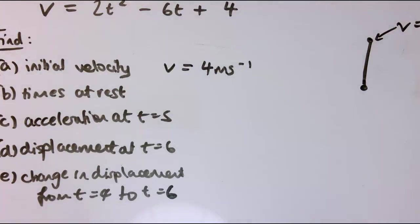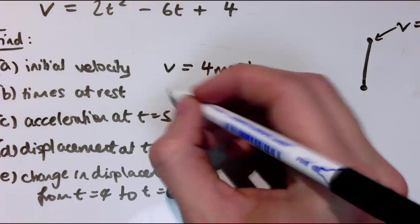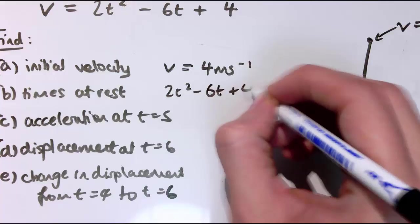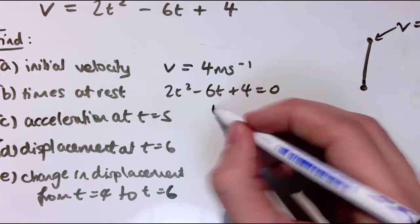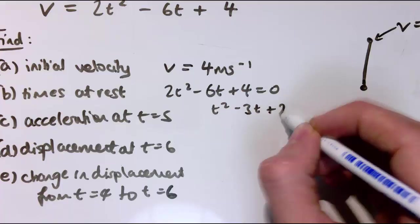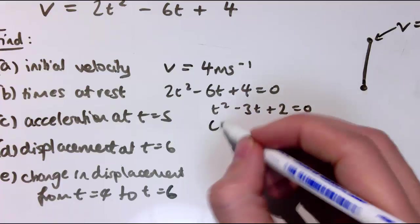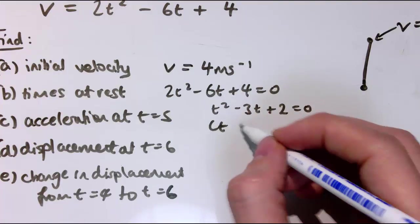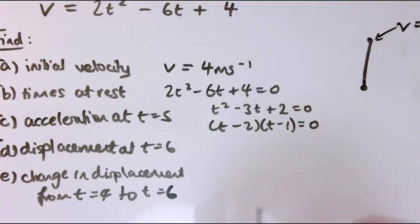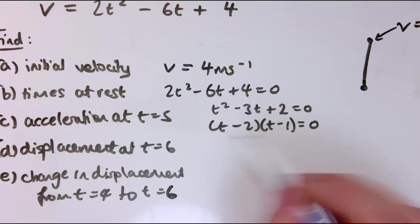I solve the quadratic: 2t² − 6t + 4 = 0, which simplifies to t² − 3t + 2 = 0, factoring as (t − 2)(t − 1) = 0. So there are two times when it's at rest: t = 1 and t = 2.